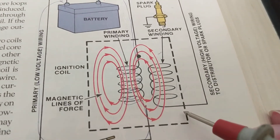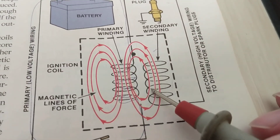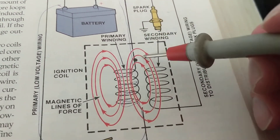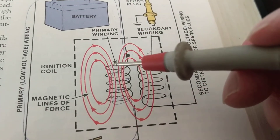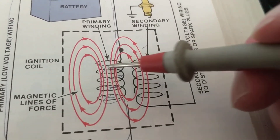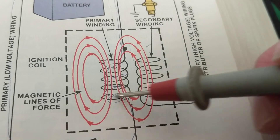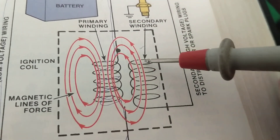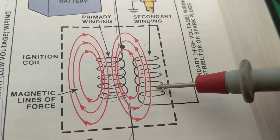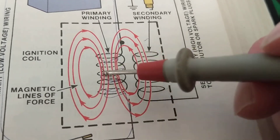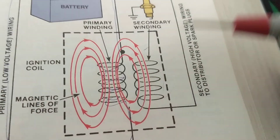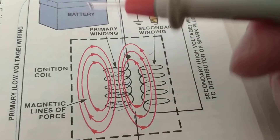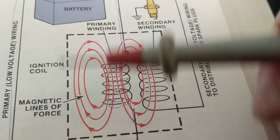Not to get too technical, but the transformer — they call it the ignition coil. We have a battery and a transformer, the ignition coil. The dark winding loops you see here are referred to as the primary. The other one is called the secondary. There is no contact between the primary and the secondary.